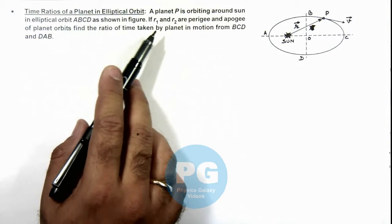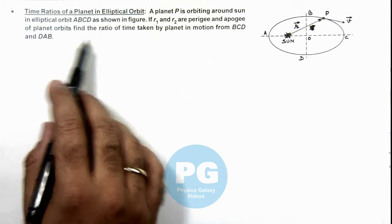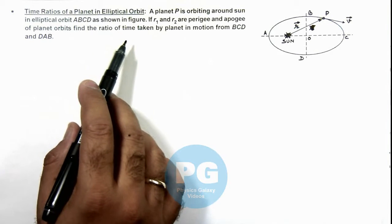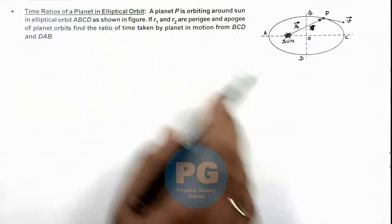Here, if r1 and r2 are perigee and apogee of planet orbits, we are required to find the ratio of time taken by the planet in motion from BCD and DAB.